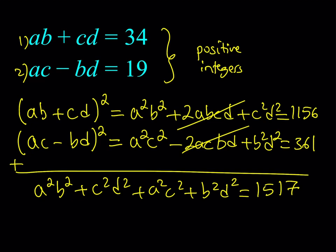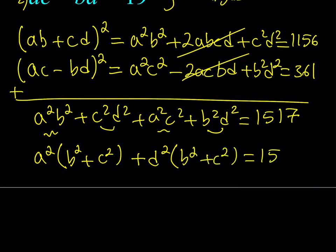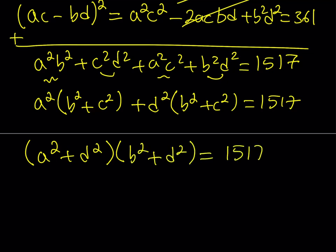And if I square the second one, notice that one of them has a plus sign, the other one has a minus sign, that's critical. I'll get A squared C squared minus 2AC BD, which is the same as 2AB CD, by the way, plus B squared D squared. And 19 squared, as you know, is 361. Now, the reason why we do this is because when you add these two squares, the terms in the middle are going to cancel out.